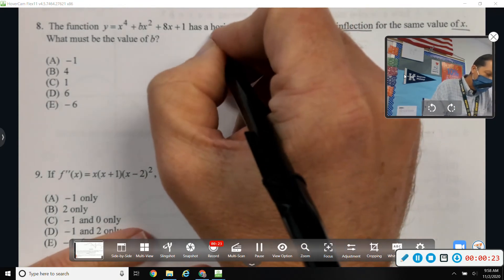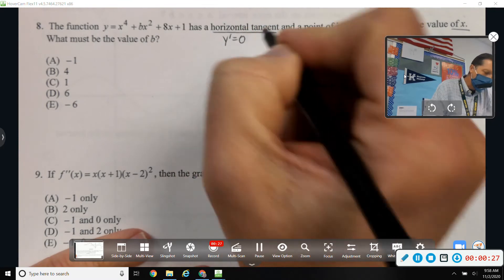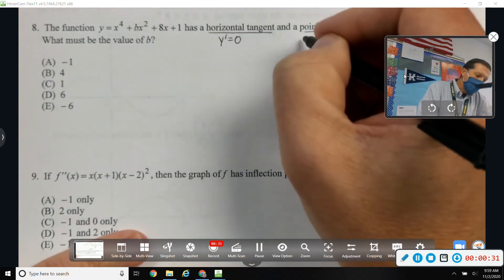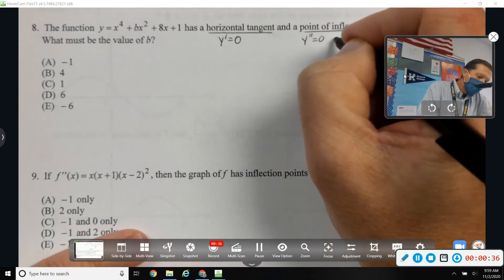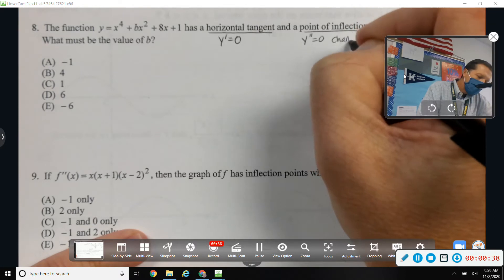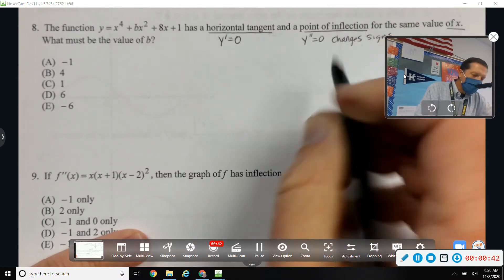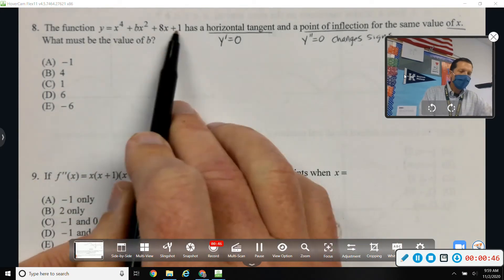Well, let's see. Horizontal tangent, that happens where y prime is 0. Point of inflection, that's a second derivative thing. Equals 0 and change of signs. Could be undefined and change of signs, but this is a polynomial, so it's not going to be undefined.